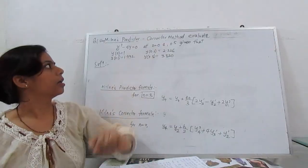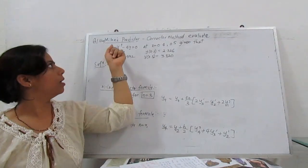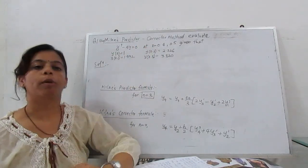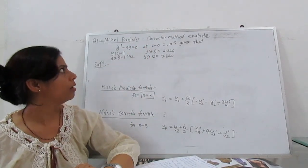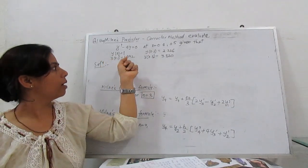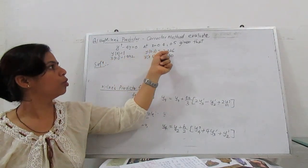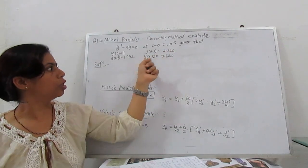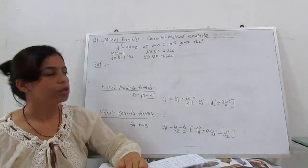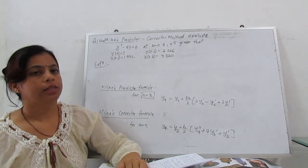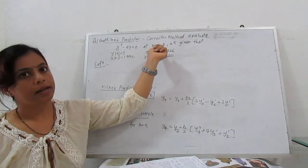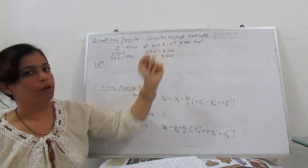Using Milne predictor and corrector method, evaluate y' - 4y = 0 at x = 0.4 and x = 0.5. Given that y(0) = 1, y(0.1) = 1.492, y(0.2) = 2.226, y(0.3) = 3.320. These are the initial values which are given and we have to calculate at 0.4 and 0.5.